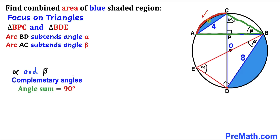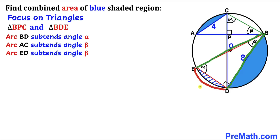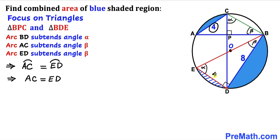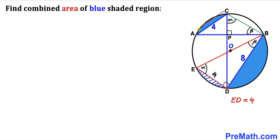Now let's focus on arc AC, which subtends angle beta at the circumference. Arc AD also subtends angle beta at the circumference. Therefore arc AC equals arc AD, since they both subtend angle beta. This means chord AC equals chord AD. Since chord AC is 4 units, chord AD is 4 units as well. The two blue shaded regions are identical, so we focus on just one of them.